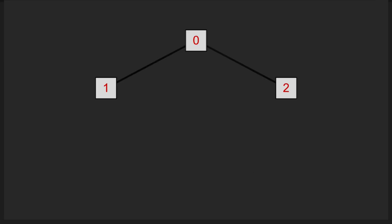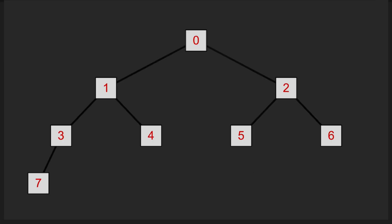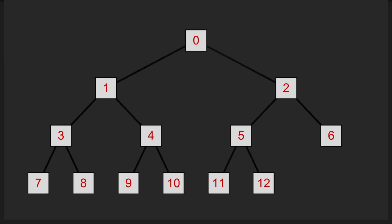Using the tree visualization, it's pretty trivial to see — given any node, say 11, its parent node is clearly 5. Or given node 4, its two child nodes are 9 and 10. But how do we actually tell the computer this?